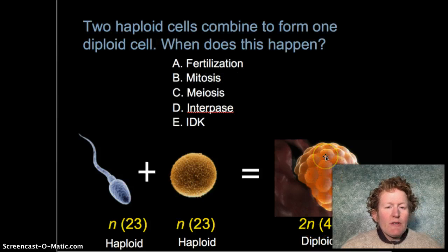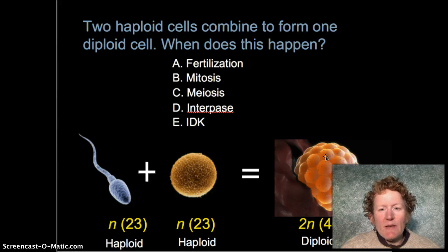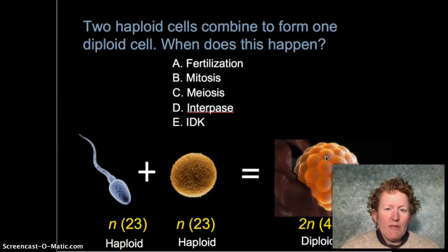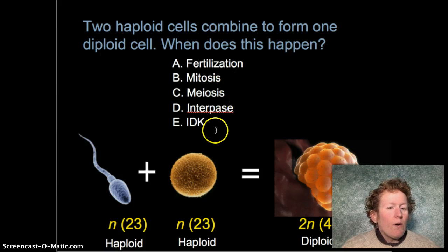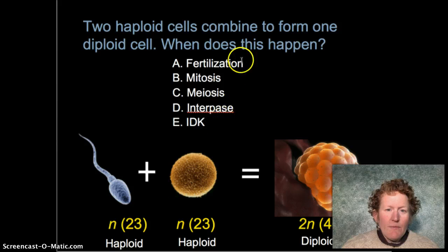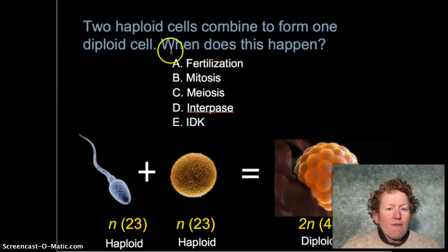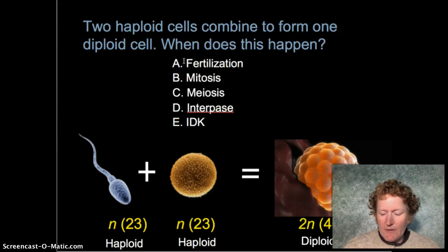Let's do the first multiple choice practice question: two haploid cells combine to form one diploid cell — when does this happen? Fertilization, mitosis, meiosis, interphase, or you don't know. The correct answer is fertilization.